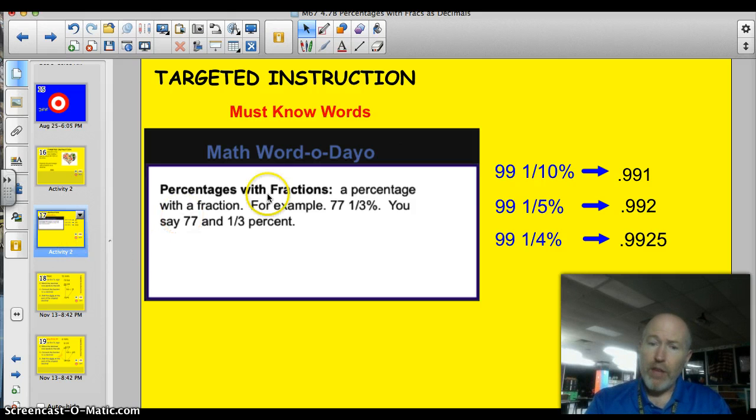What is a percentage with a fraction? Well, that's exactly what it is. It's a percentage with a fraction. That's brilliant. Take a look. 77 and 1 third percent. And that's the way you say it. 77 and 1 third percent. Check these out. Here's 99 and 1 tenth of a percent.